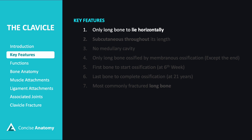It's the only long bone in the body that lies horizontally, running from the shoulder to the sternum. The clavicle is directly under the skin along its entire length, making it easily palpable. Unlike most long bones, the clavicle lacks a medullary cavity, which is the central cavity containing bone marrow.